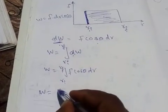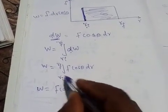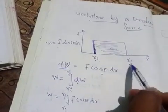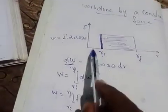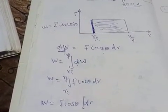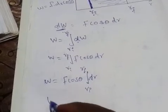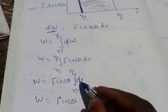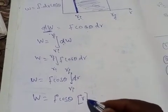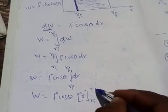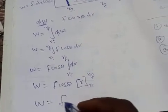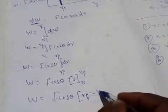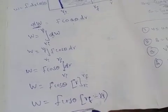W = F cosθ × ∫(Ri to Rf) dR. We can take F cosθ outside because it is a constant force — the force is constant while the displacement is changing. Integrating dR gives R, so applying the limits: W = F cosθ (Rf − Ri).